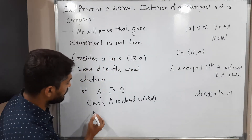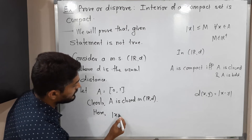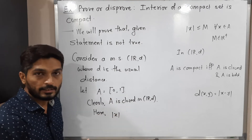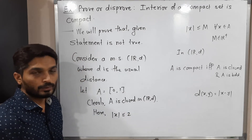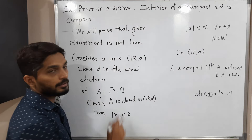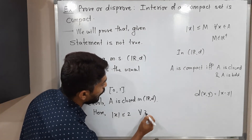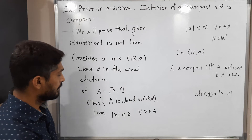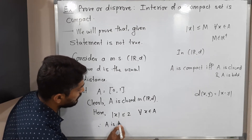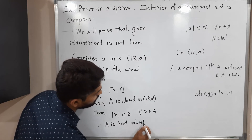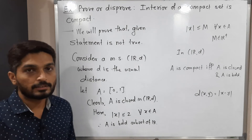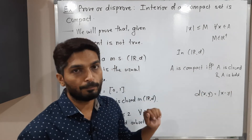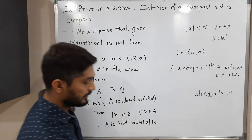Here A is the closed interval [0, 1], so if you take any point from A, its absolute value will be less than or equal to 2, for all x in A. Therefore by definition A is bounded. So A is a closed and bounded subset of R, and by the theorem we can declare A is a compact set.